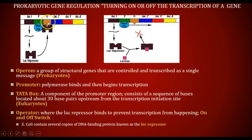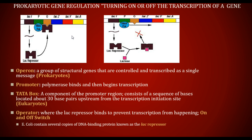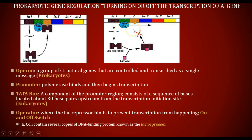Next is our operator, which is like an on and off switch. We have something called the lac repressor, which is a protein that binds here. When it's bound, that means we're not going to make any messenger RNA to make the protein for that specific gene. The lac repressor is searching for the sugar lactose, and if there's lactose in the cell, it's going to bind to the active site in the enzyme. When it binds there, the lac repressor is going to change shape and fall off the operon — the operator, the on and off switch.